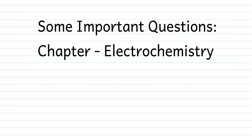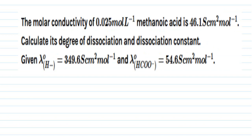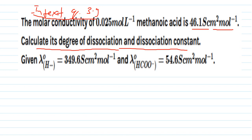Hello, good morning students. We have another question from the same chapter, electrochemistry — in-text question 3.9. The molar conductivity of 0.025 mol/L methanoic acid is 46.1 S·cm²/mol. Calculate its degree of dissociation and dissociation constant. Given: limiting molar conductivity of proton is 349.6 S·cm²/mol and limiting molar conductivity of methanoate ion is 54.6 S·cm²/mol.